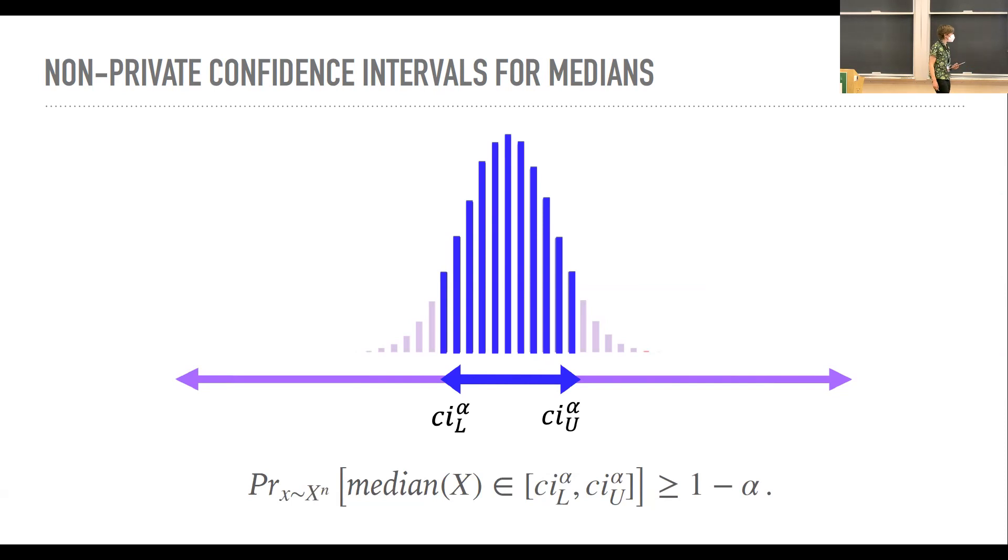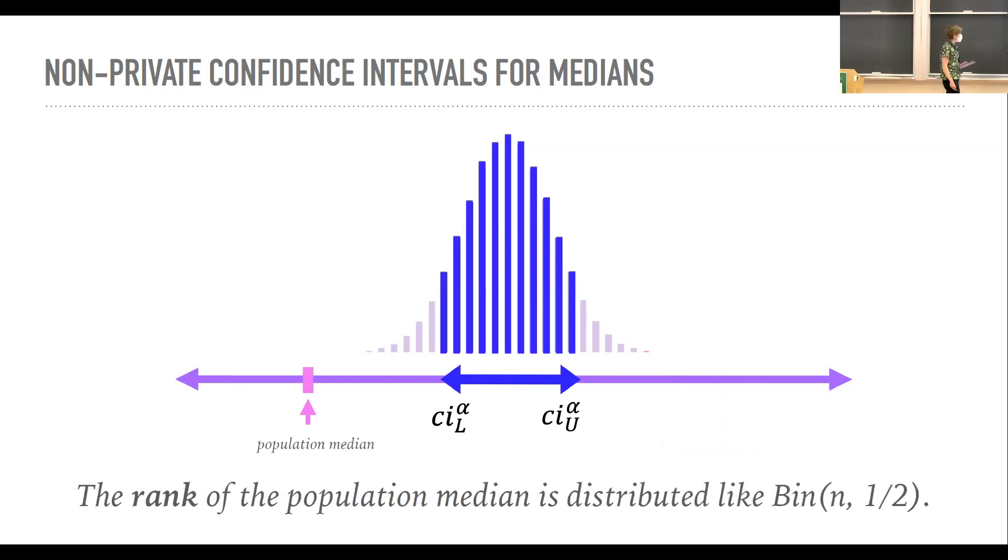So how do we find this interval in the non-parametric setting? Well, we have two different bad events. The population median could be on that side or it could be on that side. And we can bound the probability of each by alpha over two and then throw a union bound at it and proceed there.